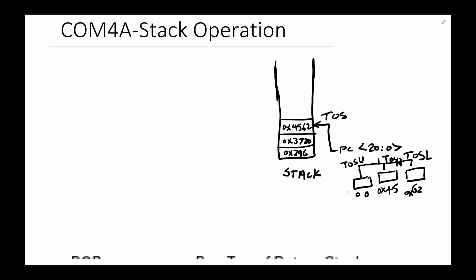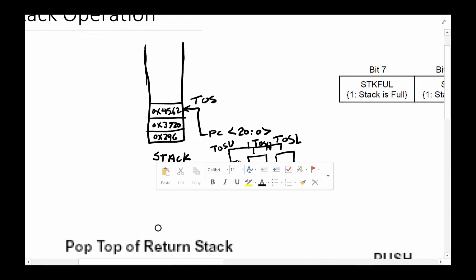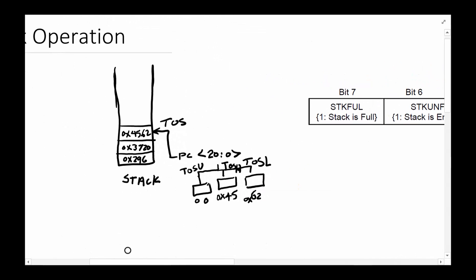The stack is a data structure concept built into the microprocessor. It allows us to stack PCs on top of each other and peel them off one at a time. The only thing visible to us is the top of stack. If we need to look at what the top of stack looks like, there are three special function registers (SFRs) that you can read to determine what the top of stack contains.